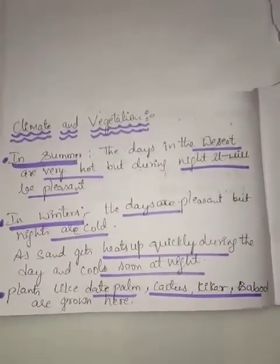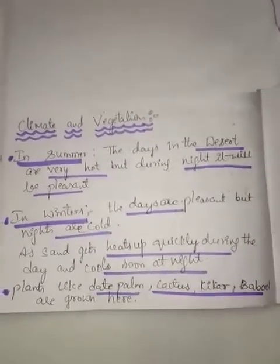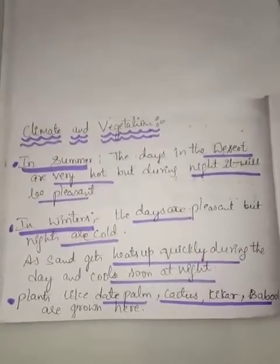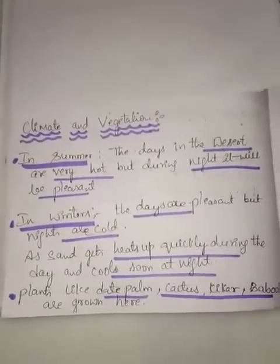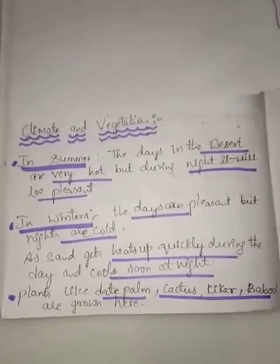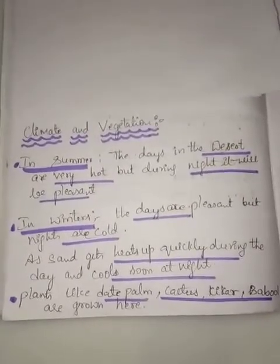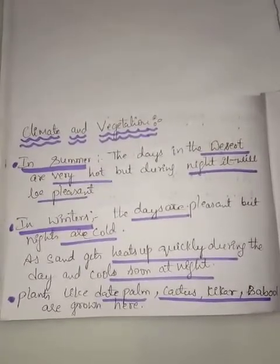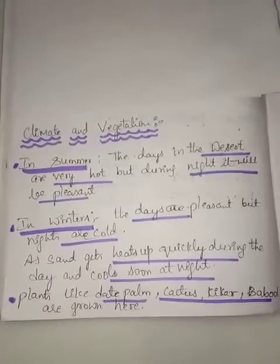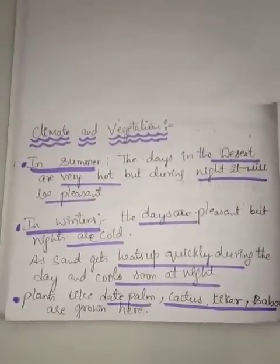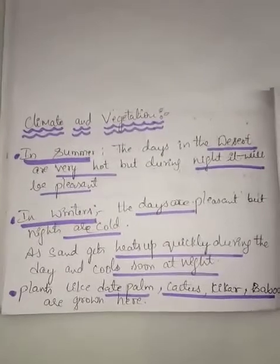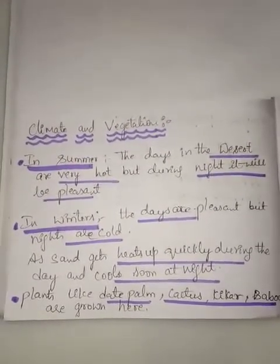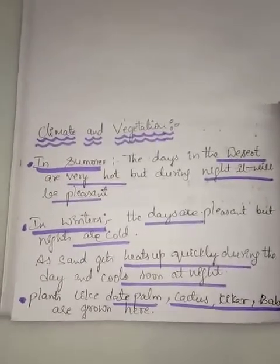In today's class we learned about the important landform — the desert. We studied the Indian Desert, its location, how the region is formed, the climate, which plants are grown, and how the day and night conditions are in this region. Children, please complete the worksheet by the given day, and be safe and healthy. Thank you.